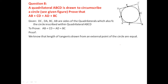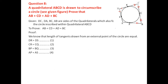Since tangents from an external point are equal: DR = DS (from D), CR = CQ (from C), BP = BQ (from B), and AP = AS (from A). Now add all four equalities: DR + CR + BP + AP = DS + CQ + BQ + AS.